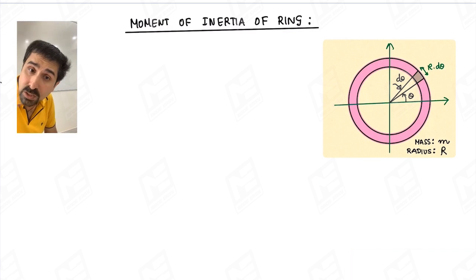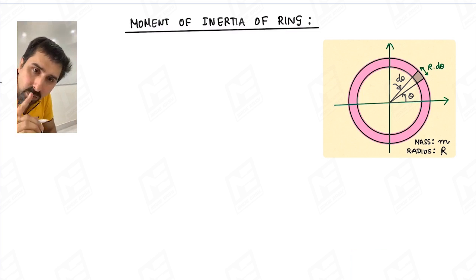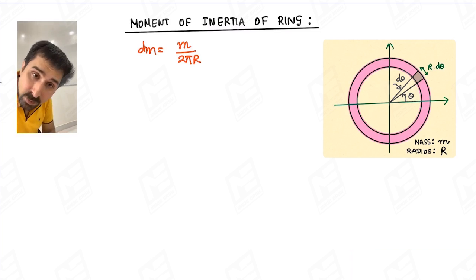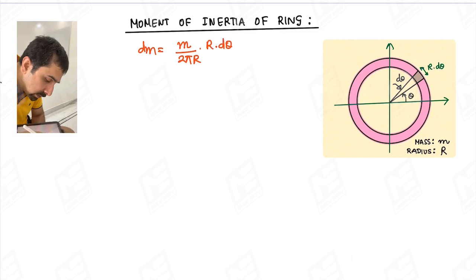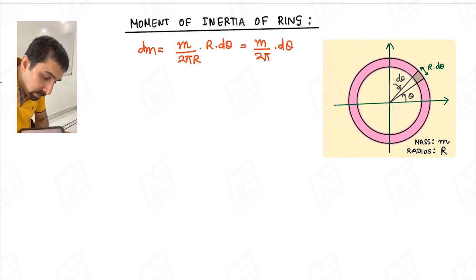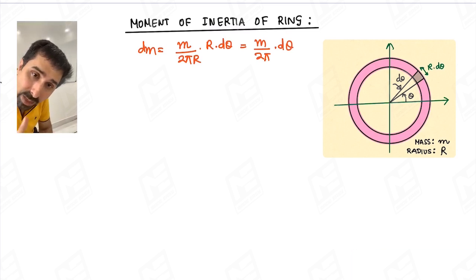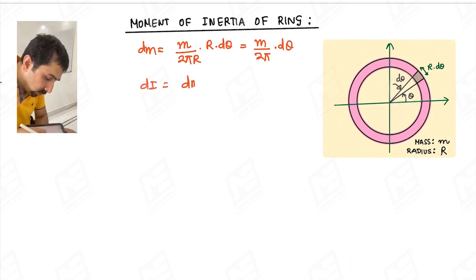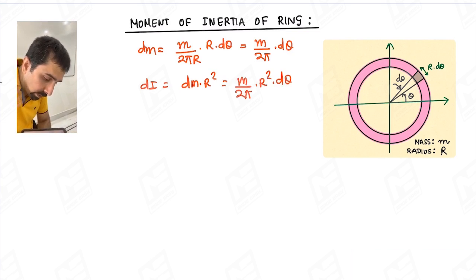A ring is again a continuous mass system. We take a very small element in the ring at angle theta of angular width dtheta, whose arc length is R dtheta. The mass of this differential element dm equals total mass m divided by the circumference 2πR, multiplied by the element length R dtheta, giving dm equals m upon 2π times dtheta. This differential element is at a distance of capital R, since all the ring's mass is at the periphery. So dI equals dm times R squared, which is m upon 2π times R squared times dtheta.